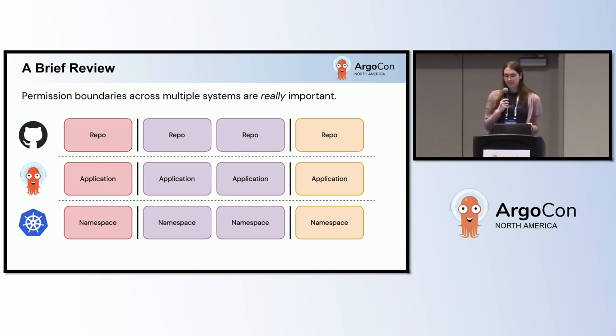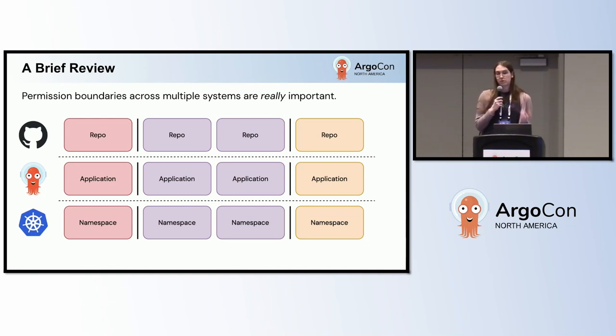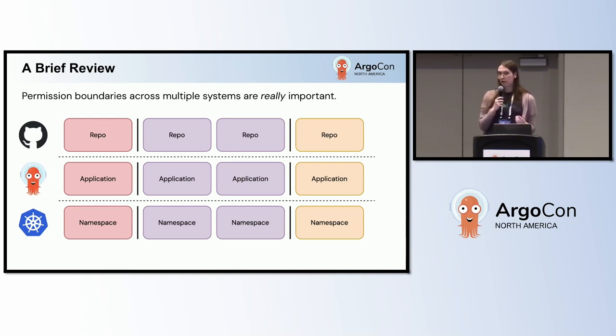In Argo CD, these permission boundaries would take the form of app projects. And in Kubernetes, this would take the form of Kubernetes native RBAC like roles and role bindings.